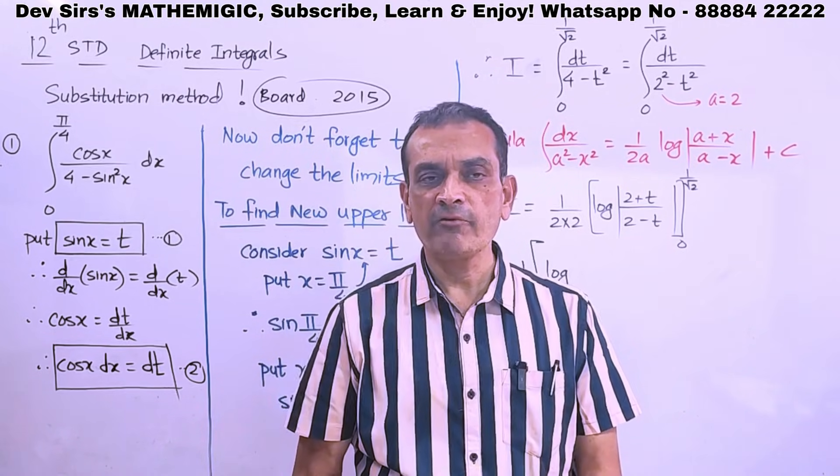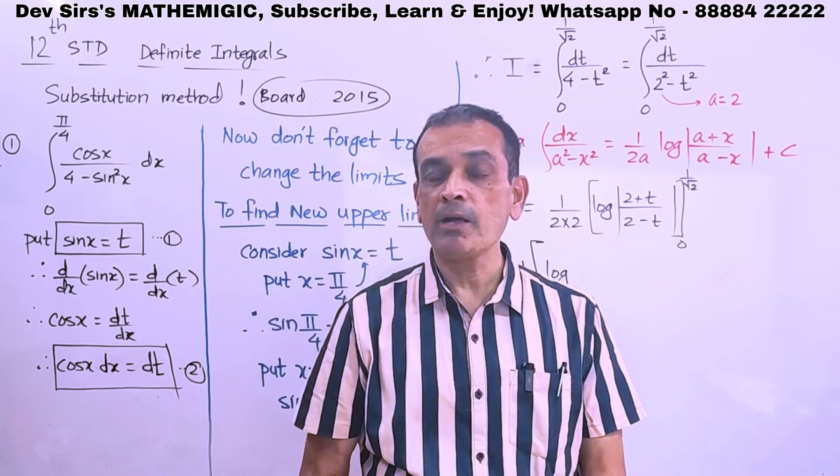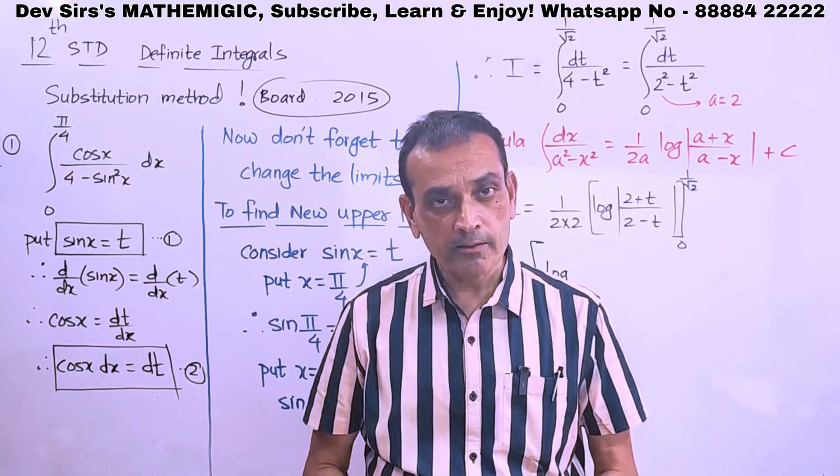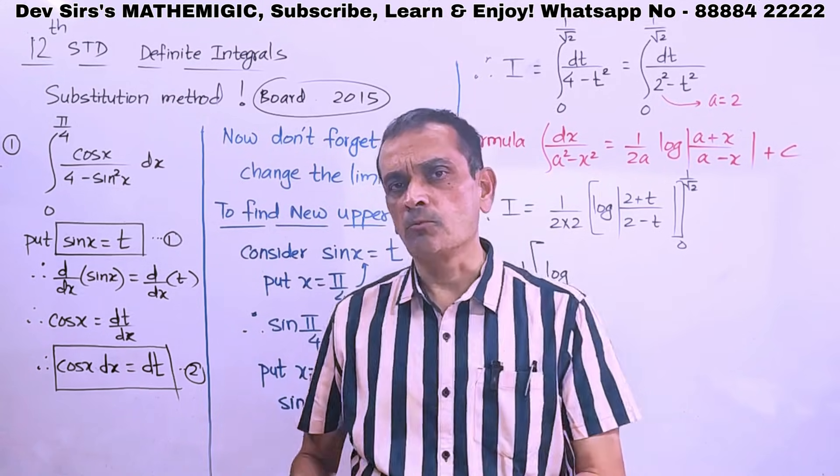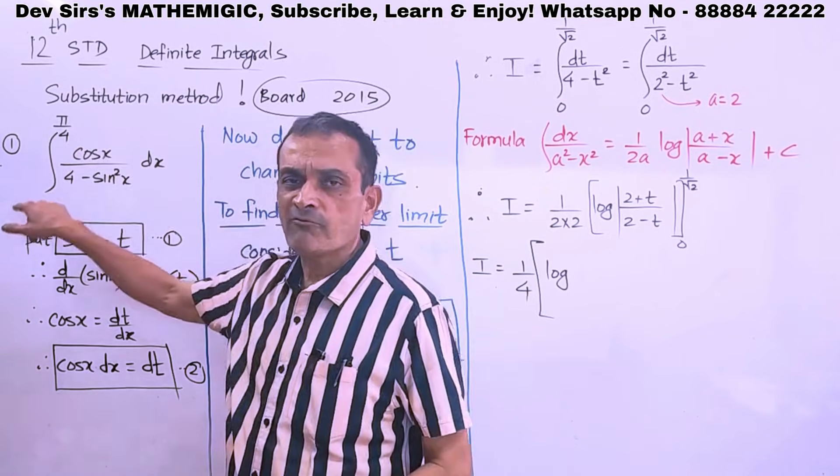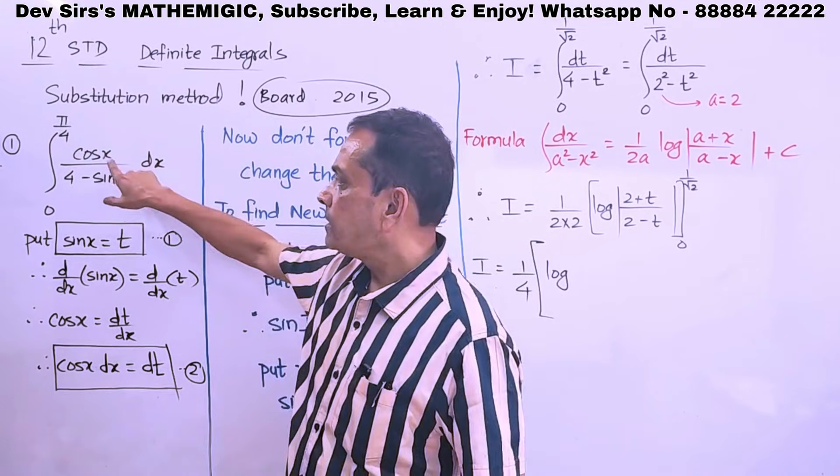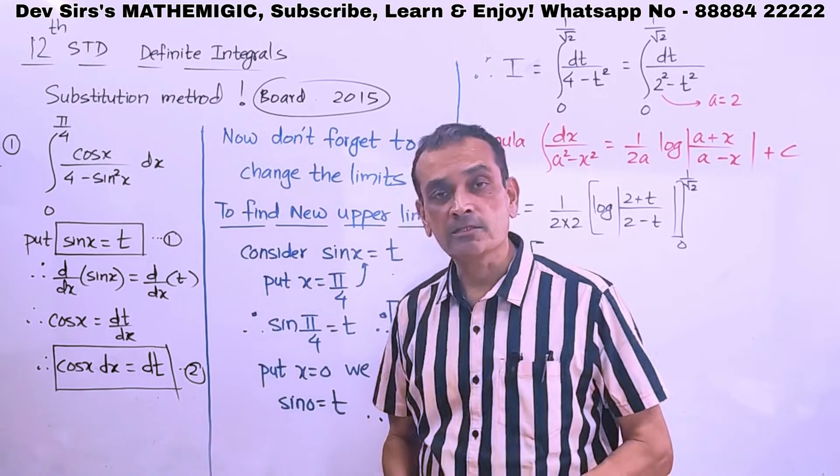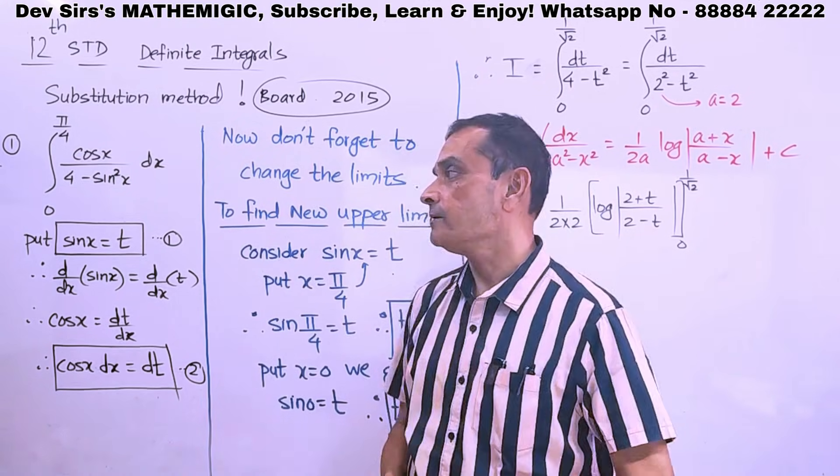Simple sum, definite integration asked in board exam, definite integration with substitution. 0 to pi by 4, limits are there, cos x upon 4 minus sin squared x. That is the given problem. You have to solve that.